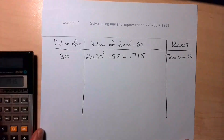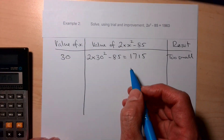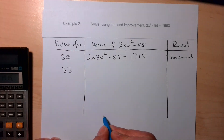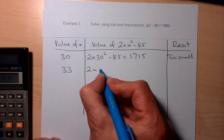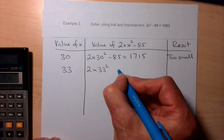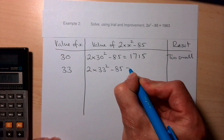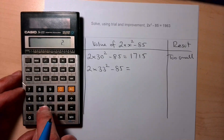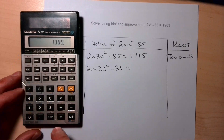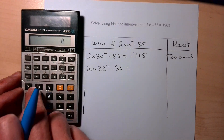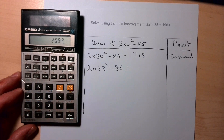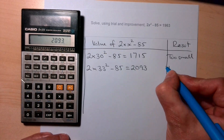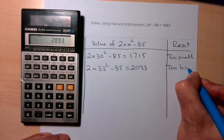We need to go bigger, so let's try x = 33: 2 × 33² − 85 = 2093. That's a bit too big now, so we need to choose something smaller.